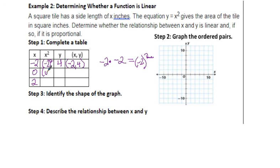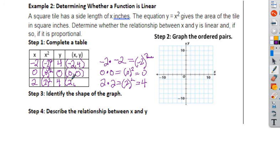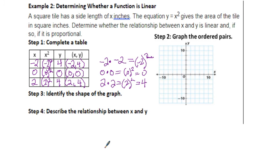Then we'll put in 0. That's 0 times 0, and we'll get the point 0, 0. Then we're going to plug in 2. 2 times 2 is the same as 2 squared, and 2 times 2 is 4. So we get 2, 4.